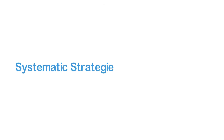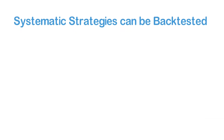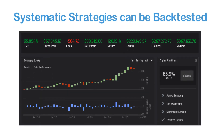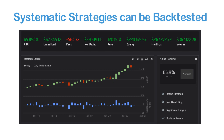Besides that, another big advantage of systematic trading strategies is that they can be back-tested. This means that you can actually analyze their historical performance before risking a dime. This is something you simply can't do with a discretionary trading strategy, for which it is very hard to evaluate performance without actually having traded it for a long enough period of time.